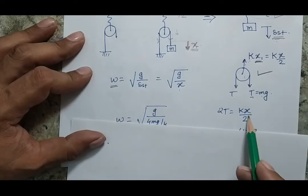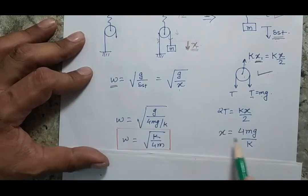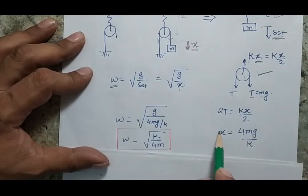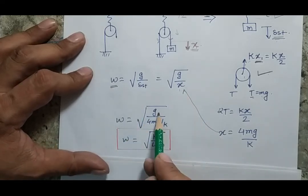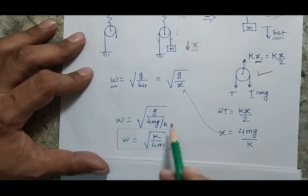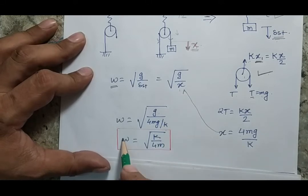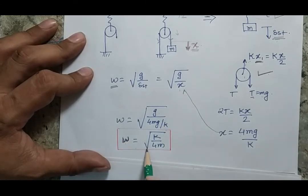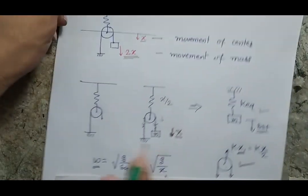From here I can get the value of x. So my x is coming out to be 4Mg by K. When I put this x into the expression, I will get omega equals the square root of G by (4Mg by K), which gives my expression for the natural frequency of this system as omega equals the square root of K by 4M.